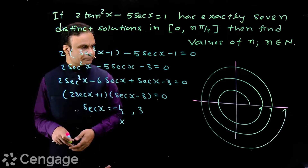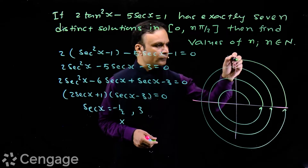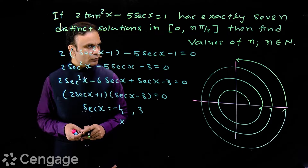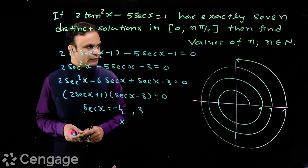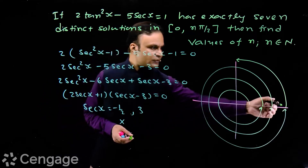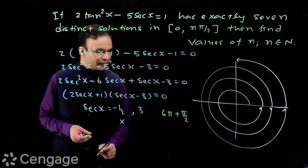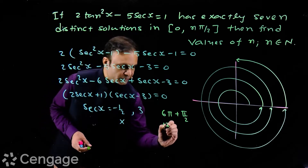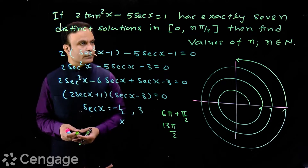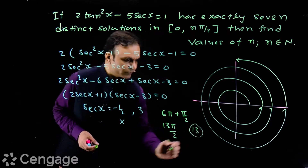We want one more value. So after 6 solutions, we can take a quarter turn. In the first quadrant, sec x = 3 gives one value. In 6π we add π/2, giving 6π + π/2, which equals 13π/2. So one possible value of n is 13.